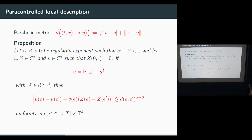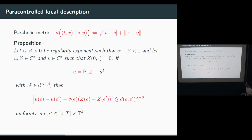This proposition tells us how to describe a function that looks like reference functions. If I take a function U that is paracontrolled by the reference function Z — that is, U equals paraproduct of Z by V plus a smoother remainder — then this variation looks like the variation of Z, with V as the Gubinelli derivative of U. This will be useful for understanding the local behavior of solutions to our SPDEs.